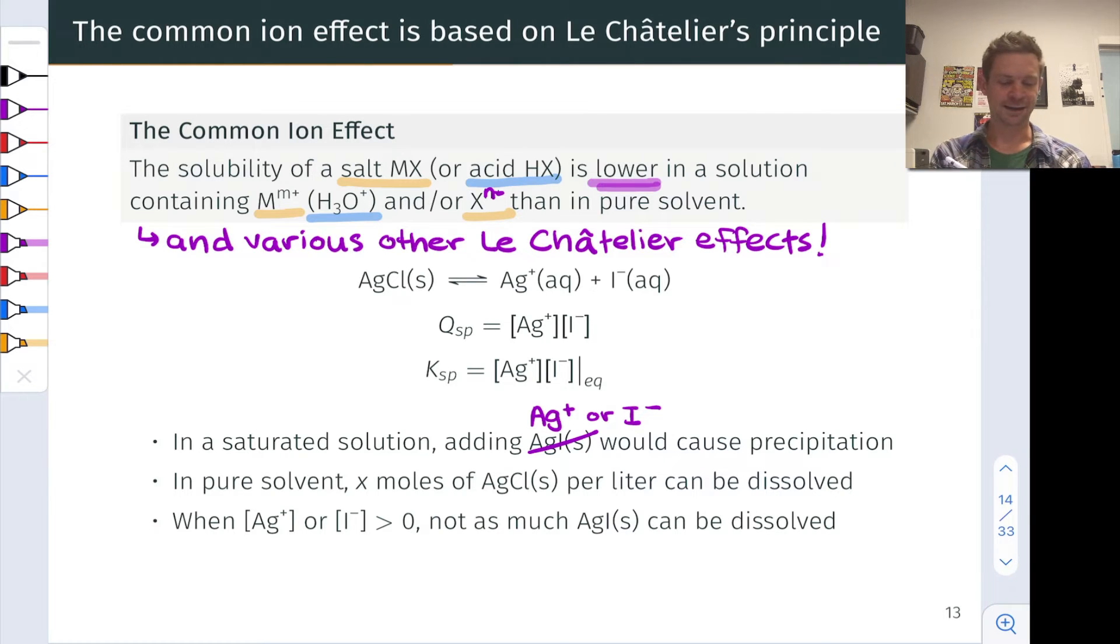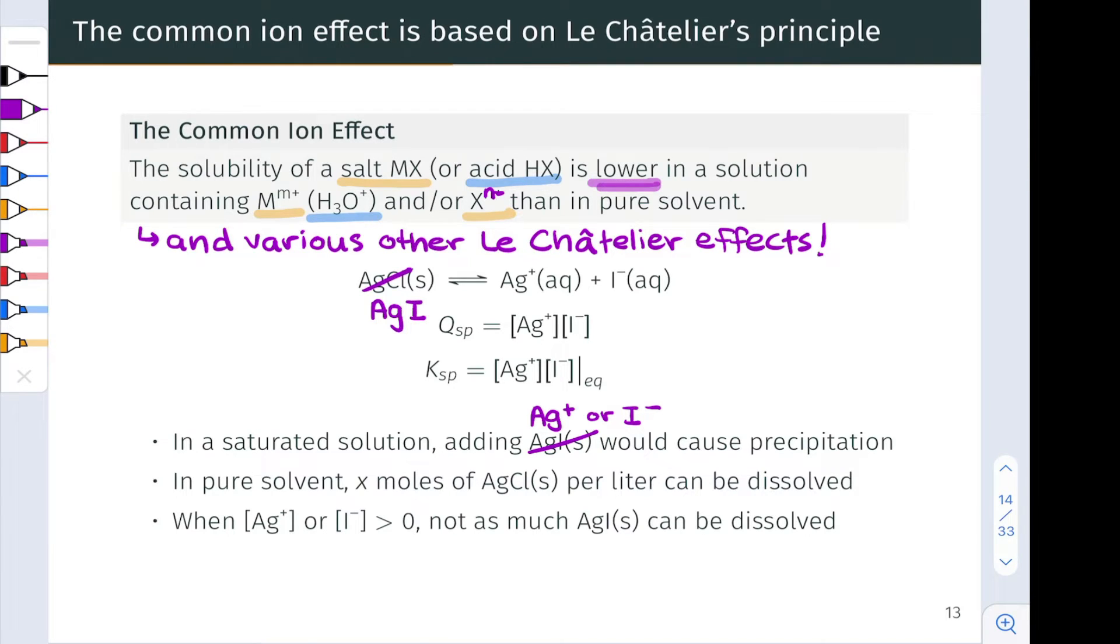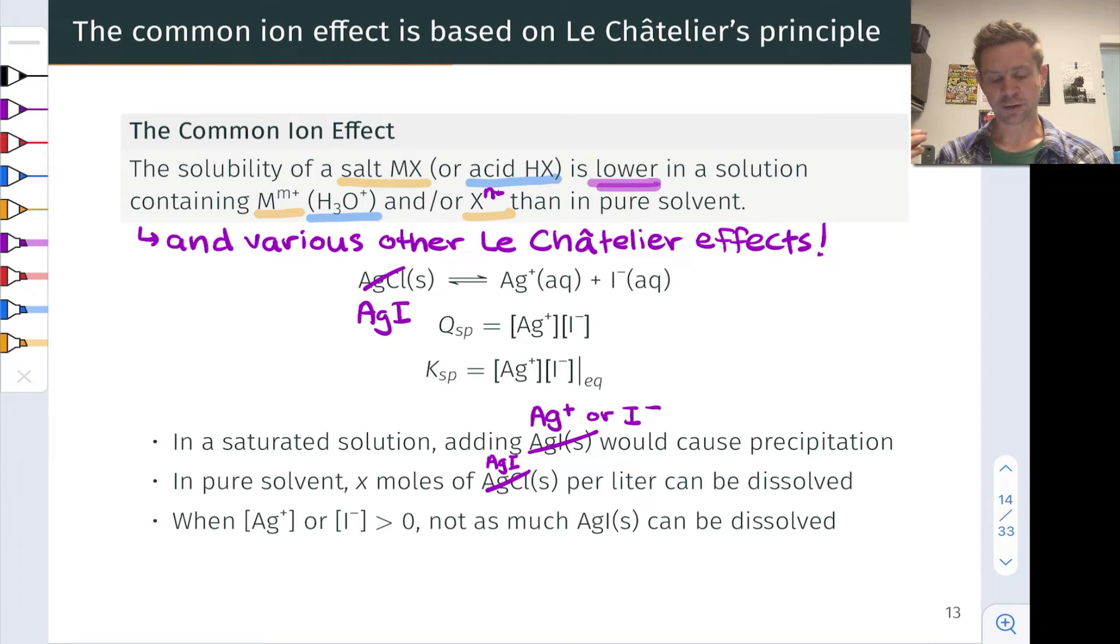Take for example silver iodide solid dissolving in water to form Ag+ and I-. So Qsp for this dissolution process is the concentration of silver plus times the concentration of I minus. And Ksp is equal to the value of Qsp at equilibrium. Now if we imagine we're at equilibrium, we've got a saturated solution with additional silver iodide sitting at the bottom of the beaker, addition of silver ion or iodide ion to that solution via some other salt with an innocuous or spectator counter ion like potassium or lithium iodide or silver nitrate would cause precipitation of silver iodide since that would push Qsp greater than Ksp and promote precipitation as the system returned to equilibrium.